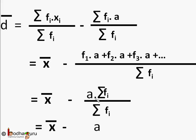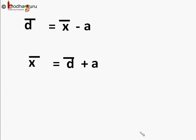So d bar equal to x bar minus A. D bar equal to x bar minus A, so x bar will be d bar plus A. So there is a very simple relation between mean of deviation and mean which we want to find. Finding d bar is very easy as we have reduced the values of di.